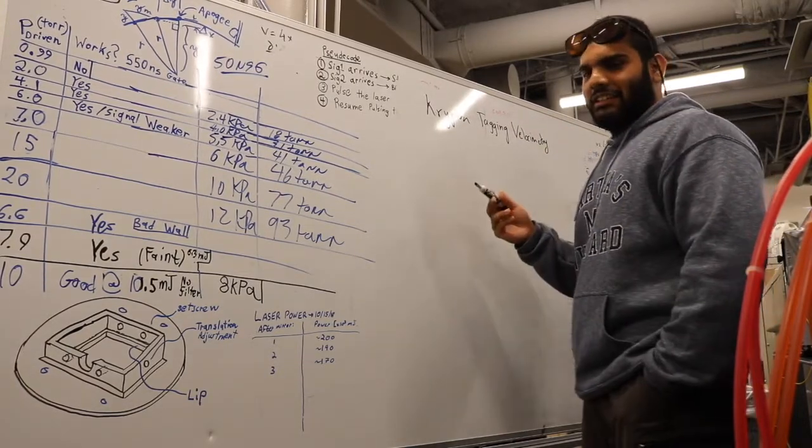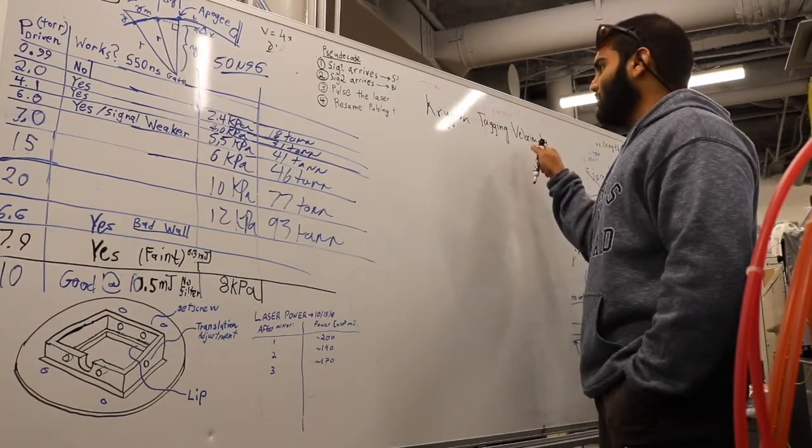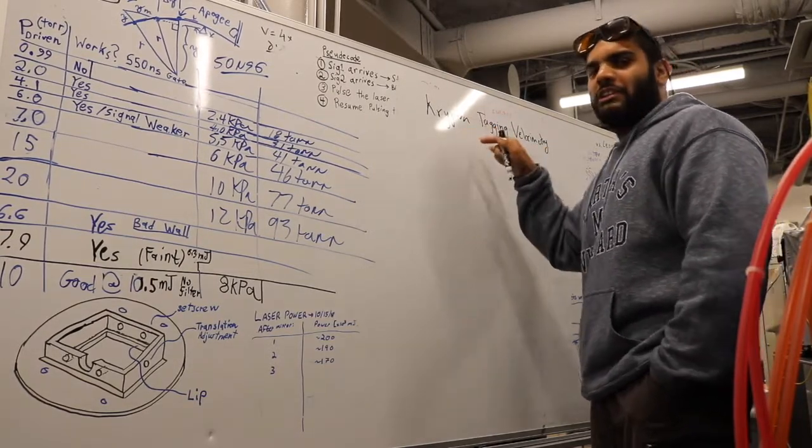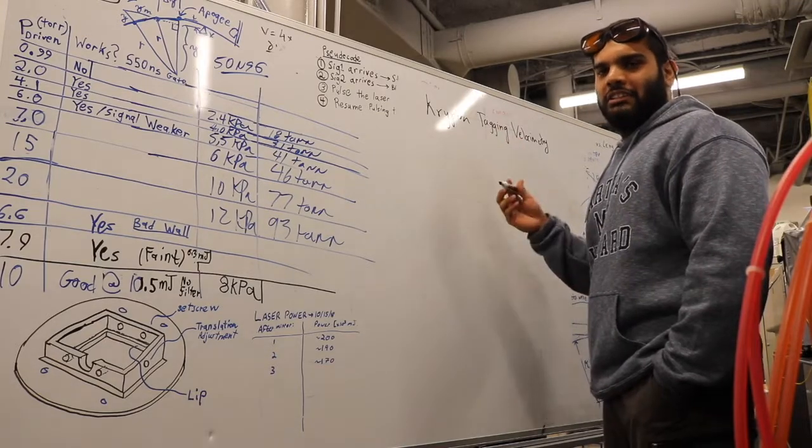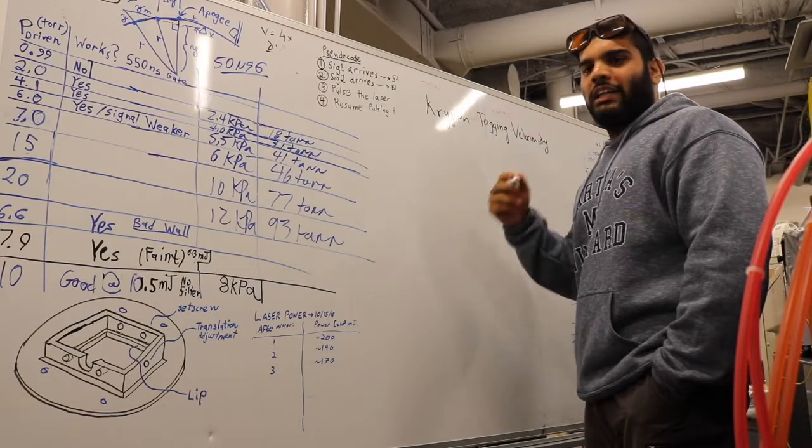What this technique is—velocimetry means measuring velocity and how we measure velocity is by using something called Krypton tagging. So what this technique does is it allows us to make measurements of velocity in high-speed gas flows.